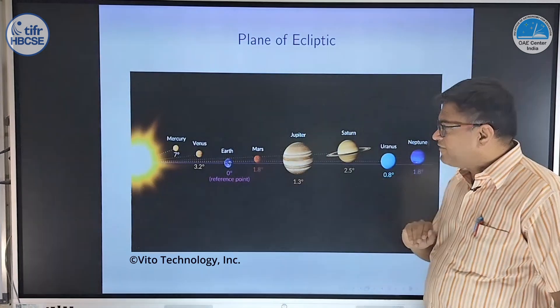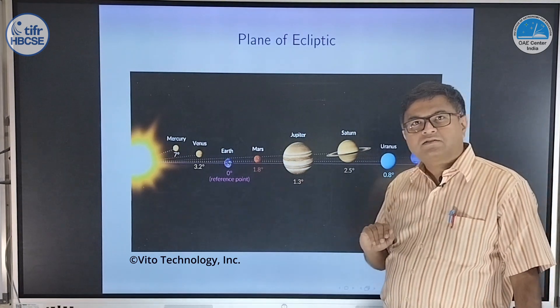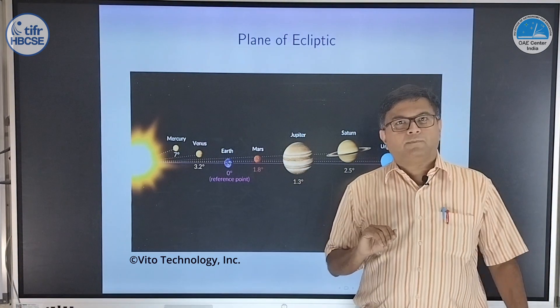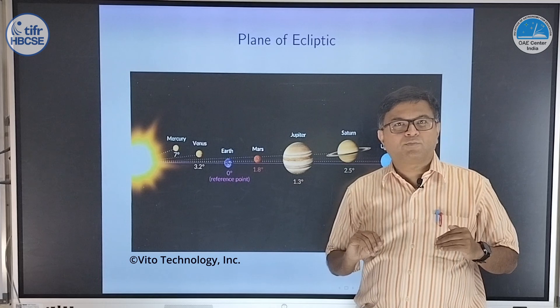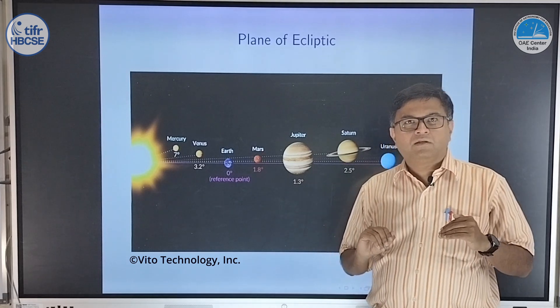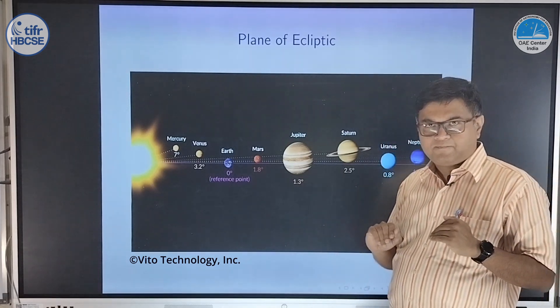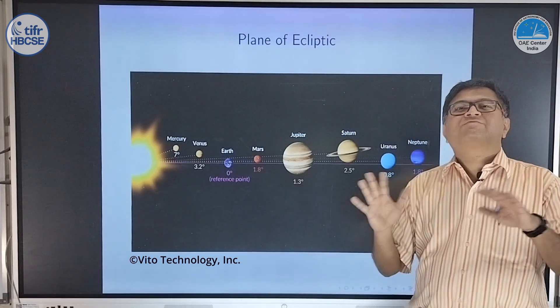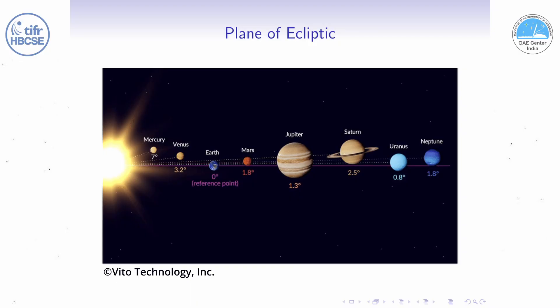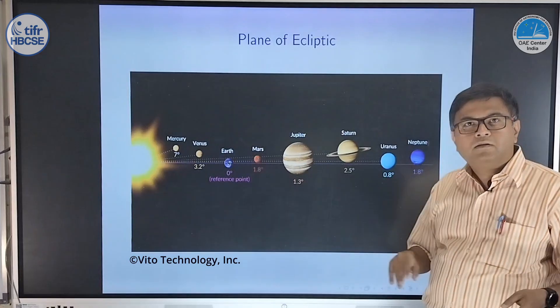To quantify that among the planets: Mercury's orbital inclination with respect to Earth's orbital plane is 7 degrees, and all the other planets are smaller than that — Venus is 3 degrees, Mars is 1.48 degrees, Jupiter is 1.43 degrees. So very small numbers, as you can see.